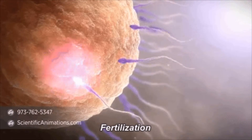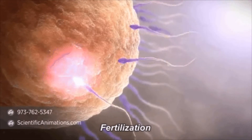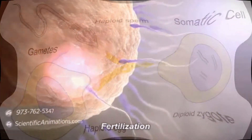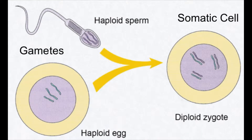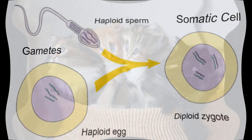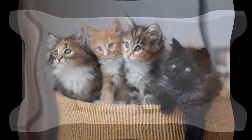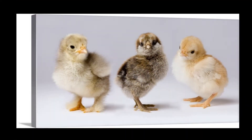The haploid gametes will create a diploid zygote with a wide variety of combinations of chromosomes. This causes genetic variation in the species. Genetic variation is fantastic as it allows adaptations to changes in the environment, which consequently can allow the organism to evolve.